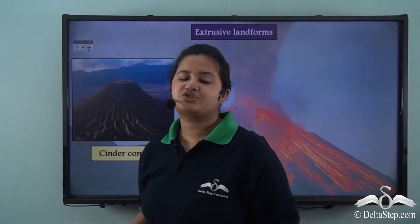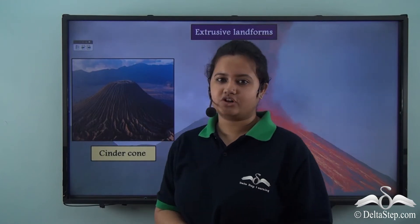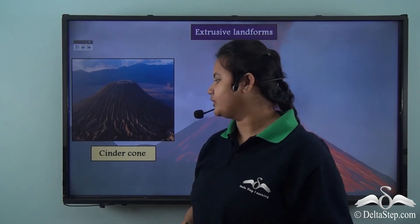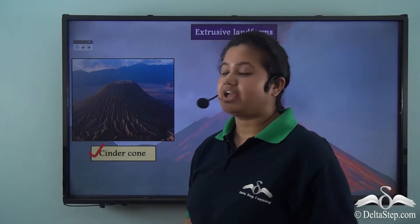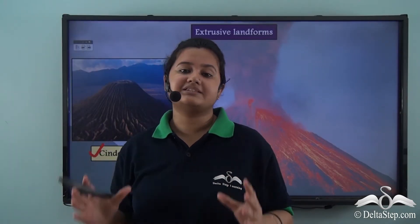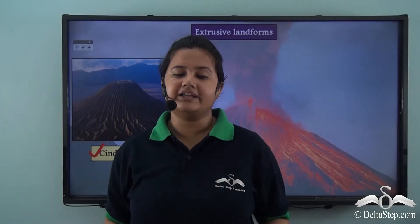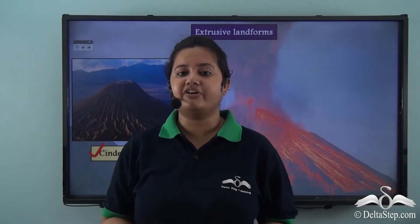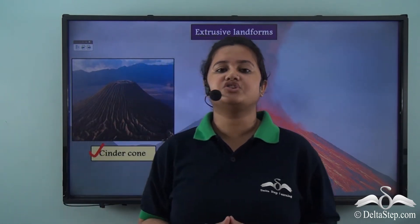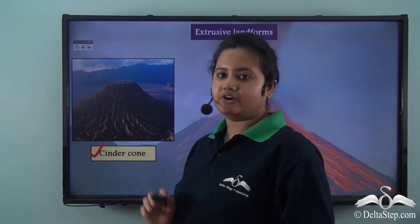Extrusive landforms have different shapes and structures. The first type of extrusive landform is a cinder cone. If lava comes out through a single crack or vent and the volcanic materials condense and solidify surrounding this crack, then a cone-shaped structure is formed and this is known as a cinder cone.